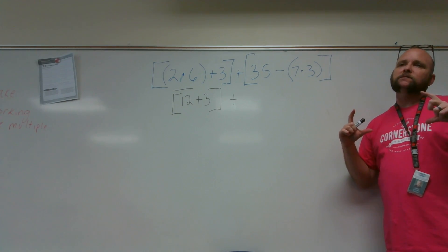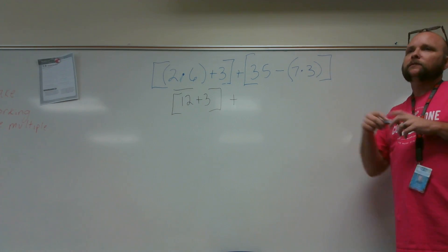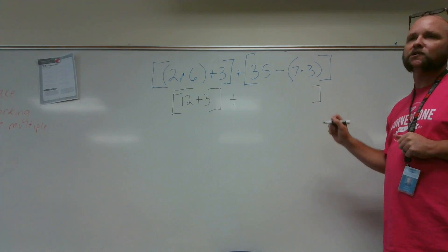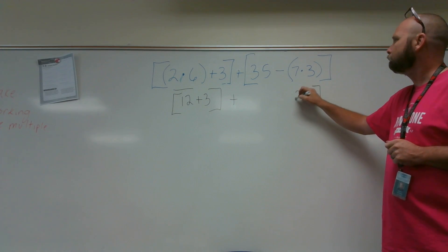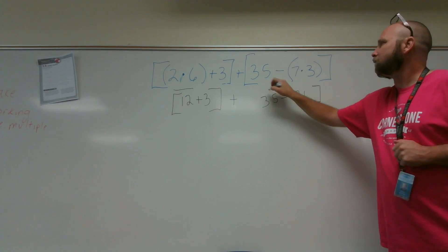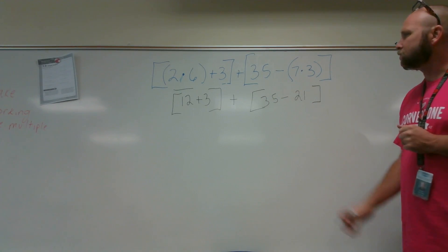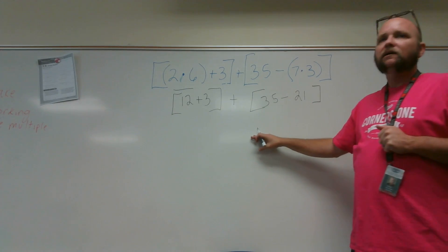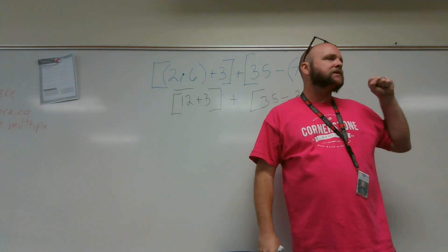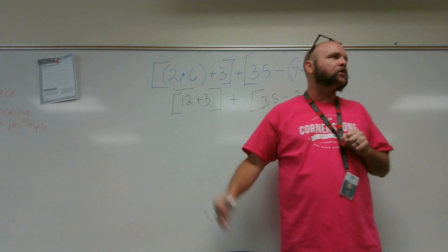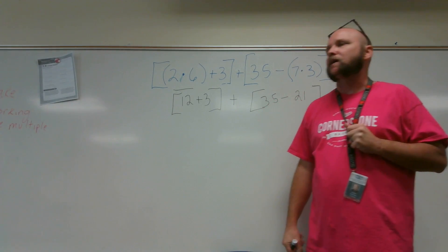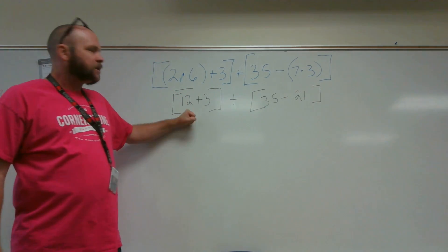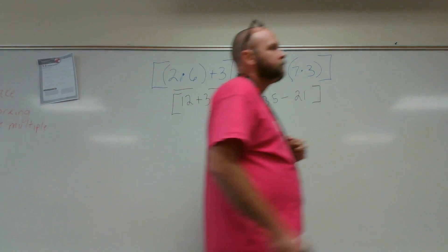I start with my grouping symbols. I find the product of 7 and 3. What is the product of 7 and 3, Benjamin? 21. Inside this bracket, I move from left to right. Class, in unison — what is the sum of 12 and 3? 15.